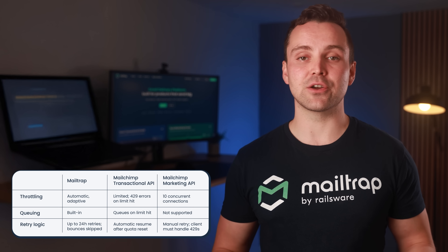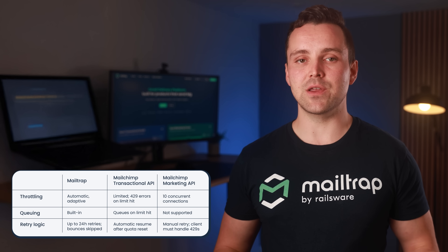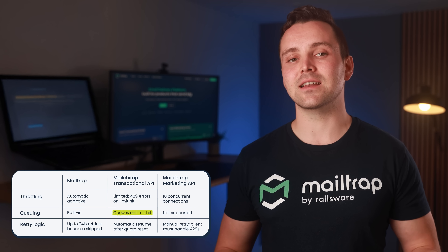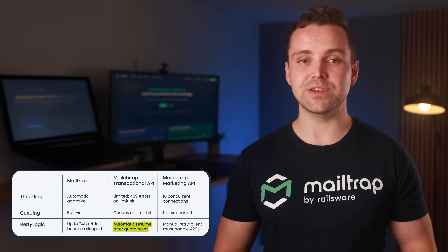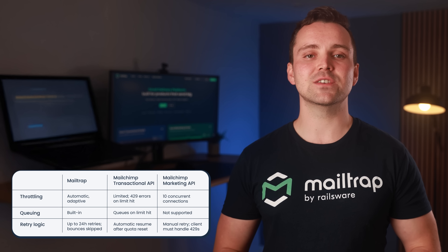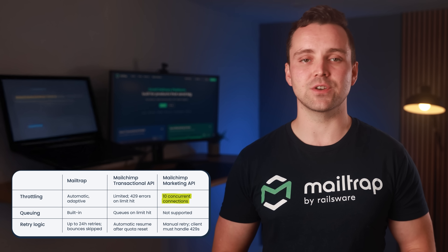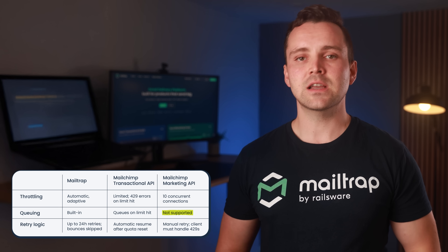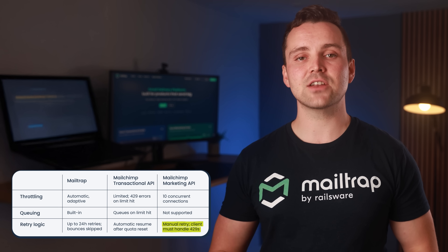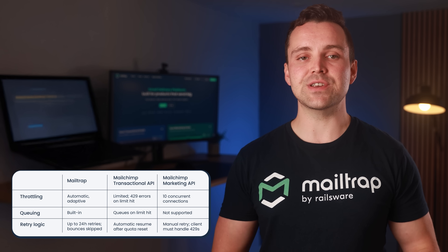MailChimp handles things differently across its APIs. With the transactional API, messages are automatically queued when you hit limits and resume sending once quota resets. The marketing API enforces a strict limit of 10 simultaneous connections. It doesn't queue failed requests, so your team has to handle retries manually by catching 429 errors and waiting out the retry window. For time-sensitive messages like signups, password resets, or system alerts, MailTrap gives you built-in stability with minimal engineering effort. MailChimp can handle the load, but your team will need to build around its limitations.